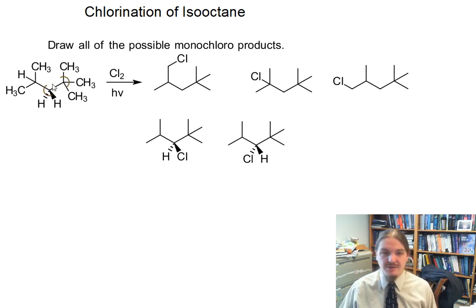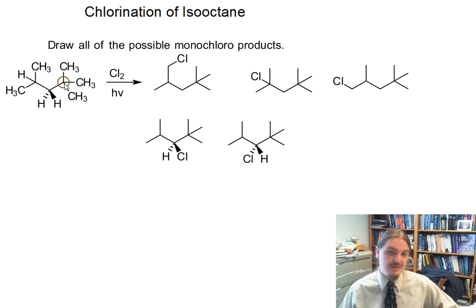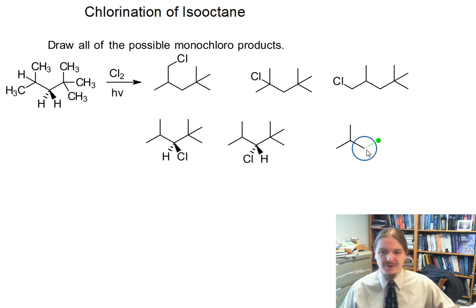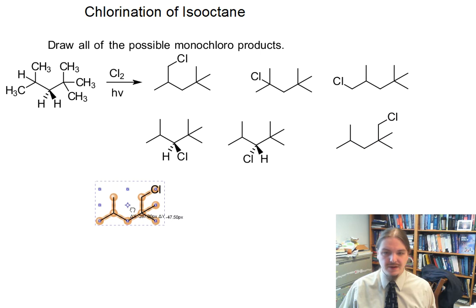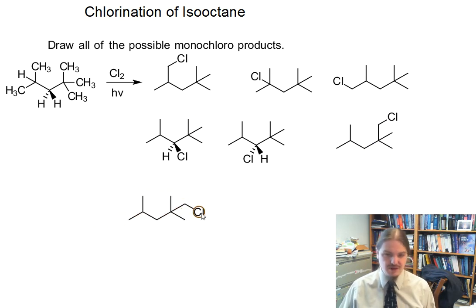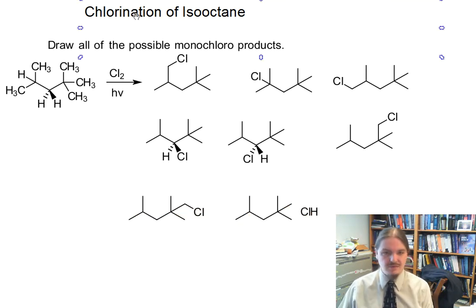Then I have the next carbon over. Is this a tertiary — or sorry, is this a quaternary carbon? There are no hydrogens here, so no chlorines there. Don't draw chlorine there — there are no hydrogens there. Chlorination requires a hydrogen to work. So I'm going to draw the product by swapping out hydrogens on each of the methyl groups and we'll see what that looks like.